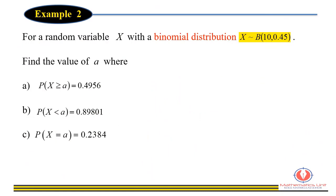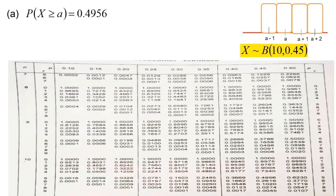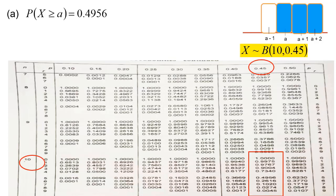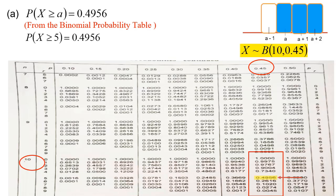Example 2: x is a binomial random variable with n = 10 and p = 0.45. Find the value of a given the following conditions. For part (a), P(x ≥ a) = 0.4956. Since the included region is a, a+1, a+2, ..., we go to the table for n = 10, p = 0.45 and search for 0.4956. We find it in the row where x = 5, so a = 5.